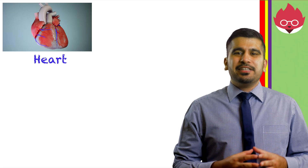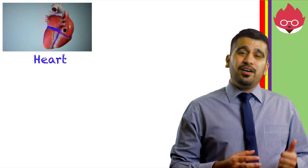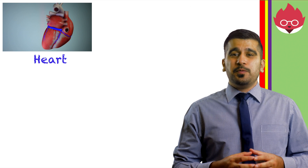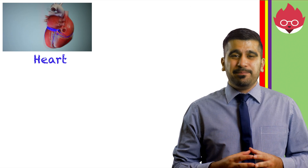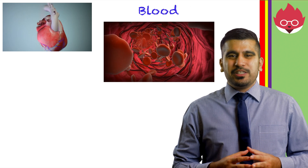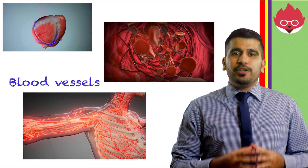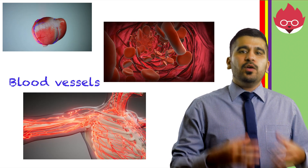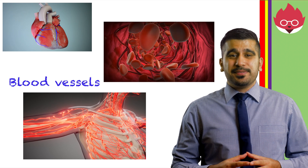The human circulatory system is made up of the heart, which is a muscular organ responsible for pumping blood around the body; the blood, which is the body's transport medium; and blood vessels, which transport blood away or towards the heart, as well as through our organs.